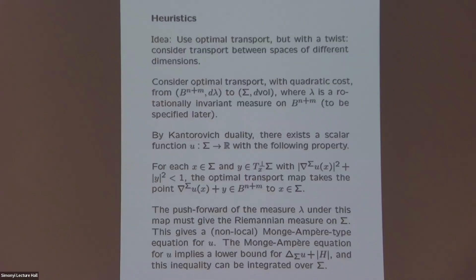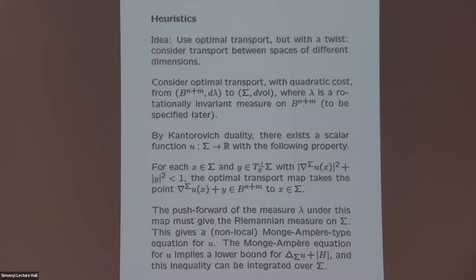From this analog of the Monge-Ampère equation, you can get a bound for the Laplacian of u plus the norm of H. Integrating over the submanifold sigma, you can get a bound for the L^1 norm of H. The integral of the Laplacian gives you a boundary term, which you can estimate in terms of the boundary measure of sigma. This is roughly how you would prove the inequality using optimal transport.